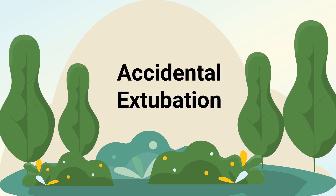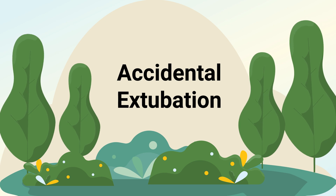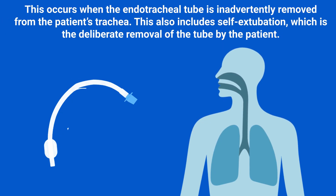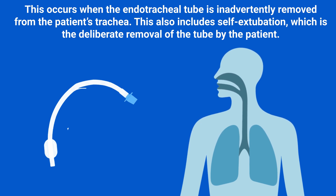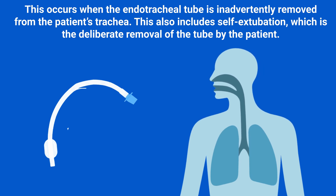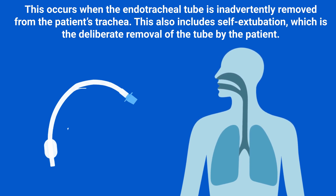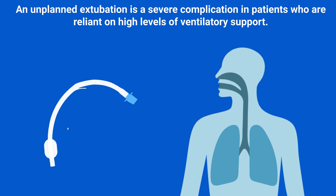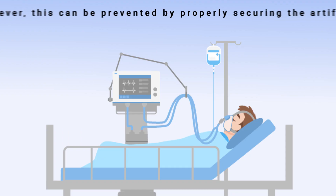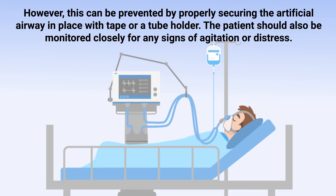Another major problem that can occur during mechanical ventilation is accidental extubation. This occurs when the endotracheal tube is inadvertently removed from the patient's trachea, and also includes self-extubation, which is the deliberate removal of the tube by the patient. An unplanned extubation is a severe complication in patients who are reliant on high levels of ventilatory support. However, this can be prevented by properly securing the artificial airway in place with tape or a tube holder.